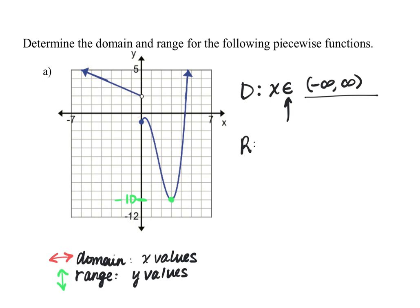For the range — these are y values — I'll write y is an element of, and then put my interval here. Negative 10 is the smallest y value, and we're going to use a bracket because we are including that point. The coordinate here looks to be (3, -10), so y = -10 is the actual y value. Because this is a solid dot, the graph does touch at negative 10, so we choose a bracket on negative 10.